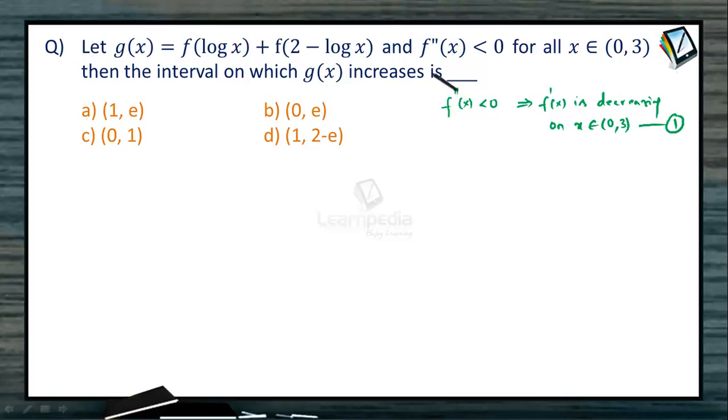Now let us look at the function g(x). It is f(log x) + f(2 - log x). Once we have g(x), how do we identify its monotonicity? Where the derivative is positive it will be increasing, and where g'(x) is negative it will be decreasing.